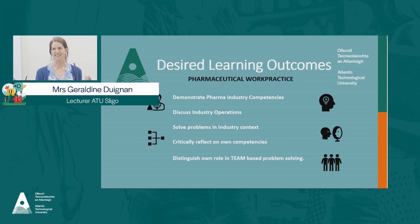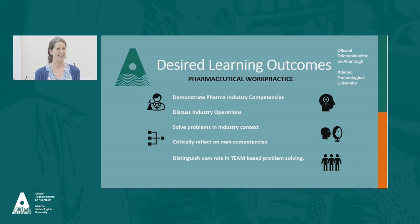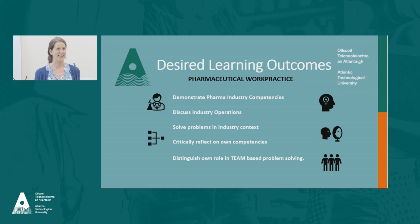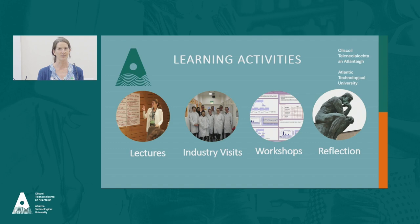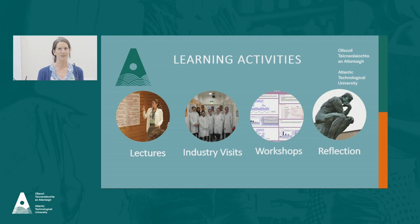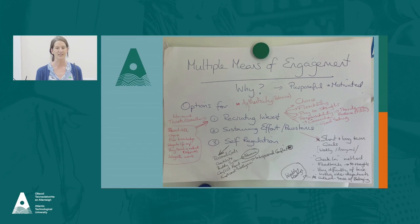The module is called Pharmaceutical Work Practice — a 10-credit module in the fourth year of the pharmaceutical programme. Students must demonstrate pharma industry competency at the end: they need to discuss operations relevant to the industry, solve problems in a regulatory context, critically reflect on their own competencies, and distinguish their role within team-based problem solving. The module is structured with lectures, industry visits, and team-based problem solving workshops.